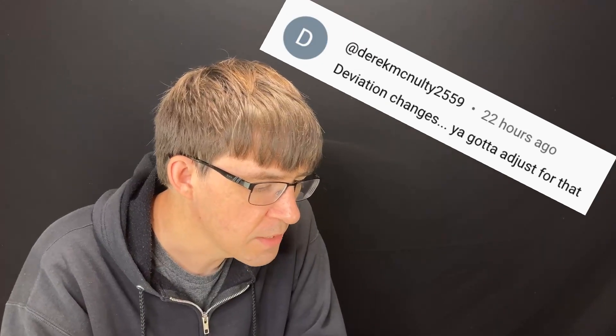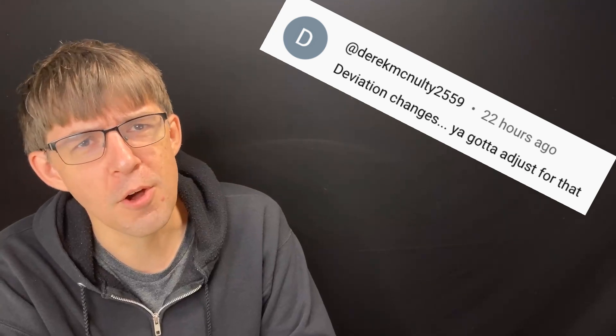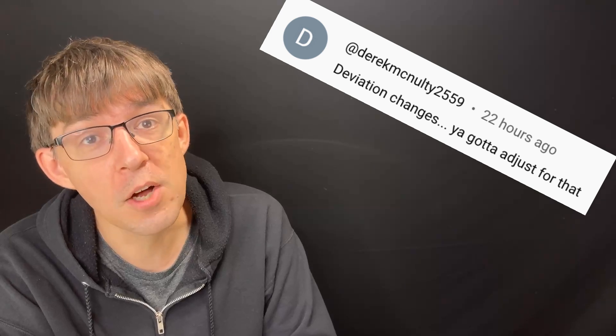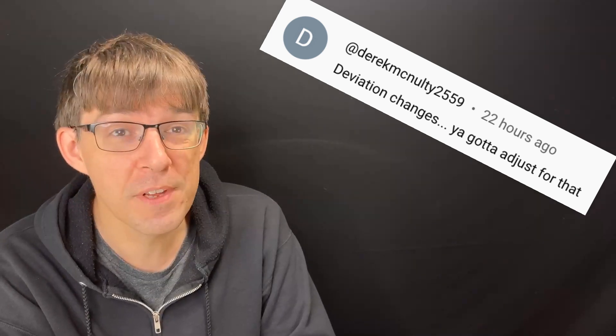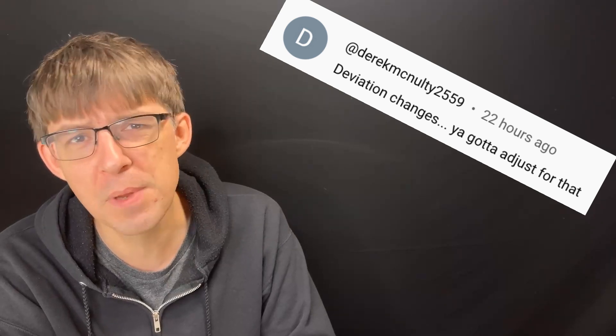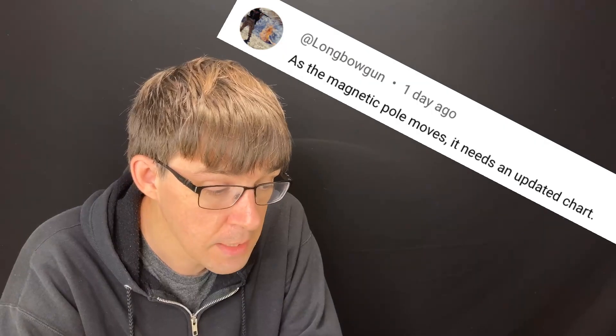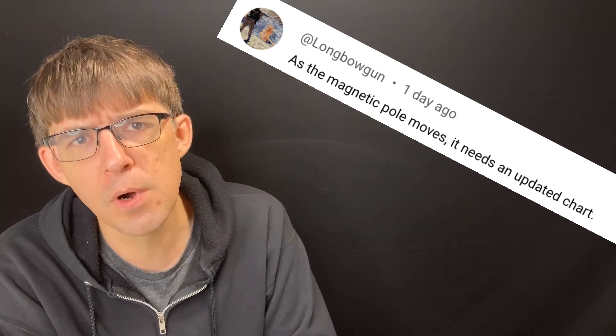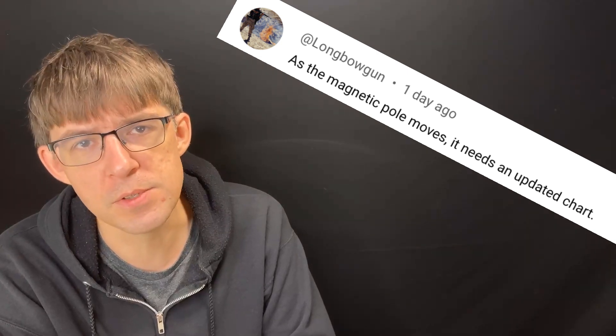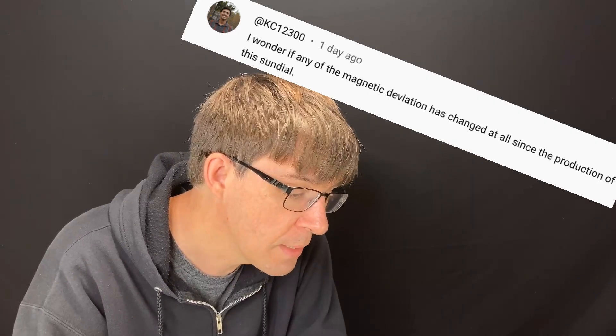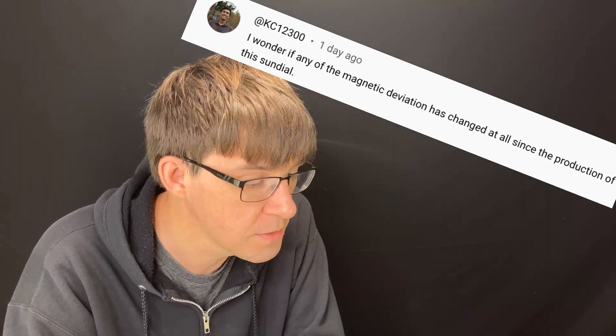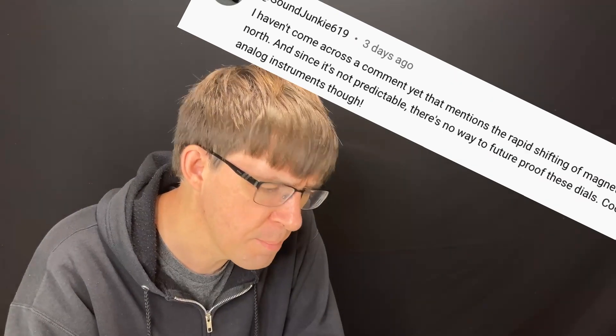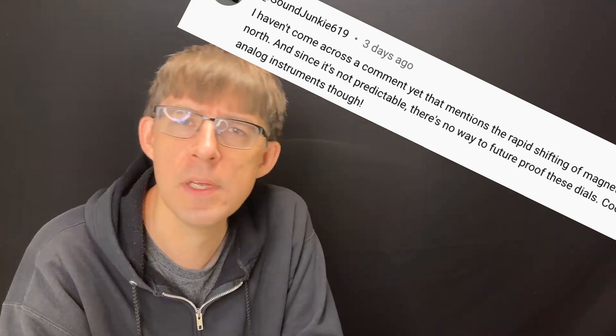Deviation changes. You gotta adjust for that. Yeah, I know. I've discussed this in the longer video, but thanks to the hundreds of people who chimed in on this point. The Earth's magnetic field is slightly unstable and it changes over time. So the 10 degree figure that I was using is slightly out of date at this point. For me, where I am, it's more like 13. As the magnetic pole moves, it needs an updated chart. That's actually a good idea. It wouldn't be too hard to print out a different chart with all updated numbers on it. Get on that. I wonder if any of the magnetic deviation has changed at all since the production of this sundial. Yes, it has. About 3 degrees for me. I haven't come across a comment yet that mentions the rapid shifting of magnetic north. Keep reading, bro.